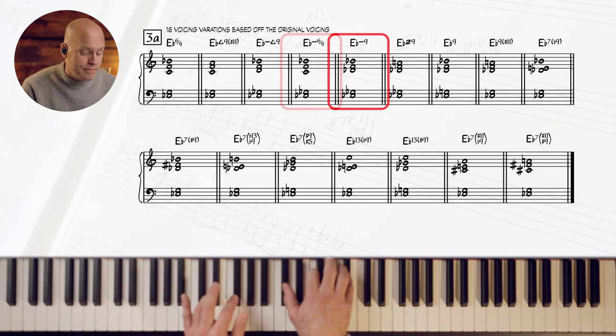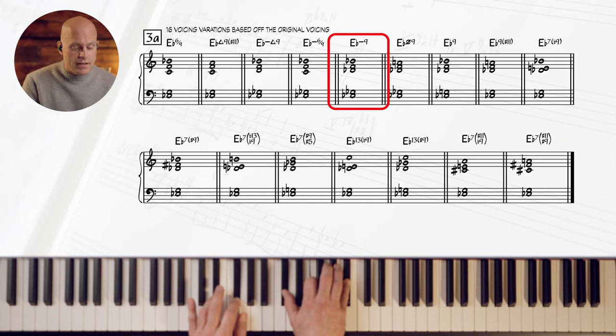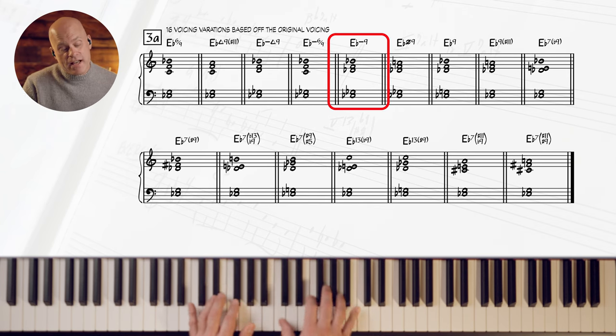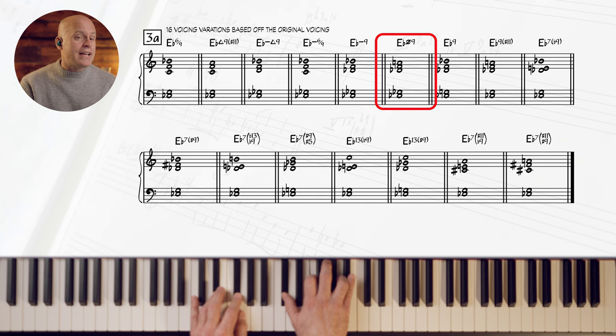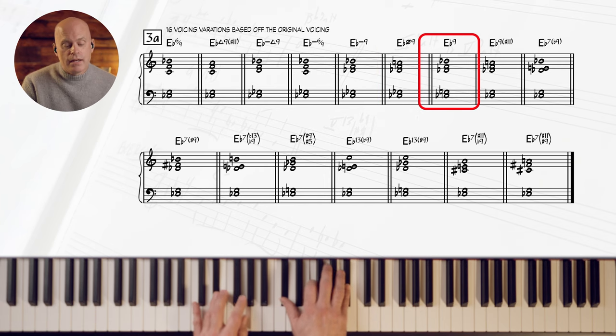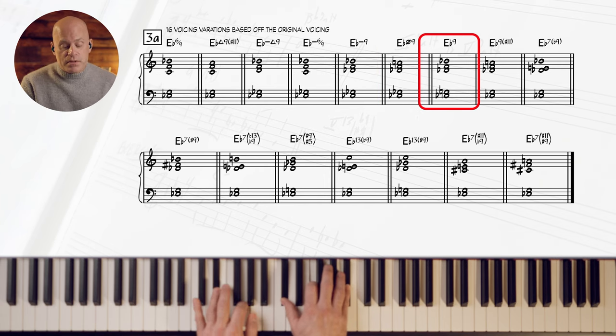E flat minor nine. E flat half diminished nine. E flat nine, dominant seven. E flat nine sharp 11. E flat seven sharp nine.